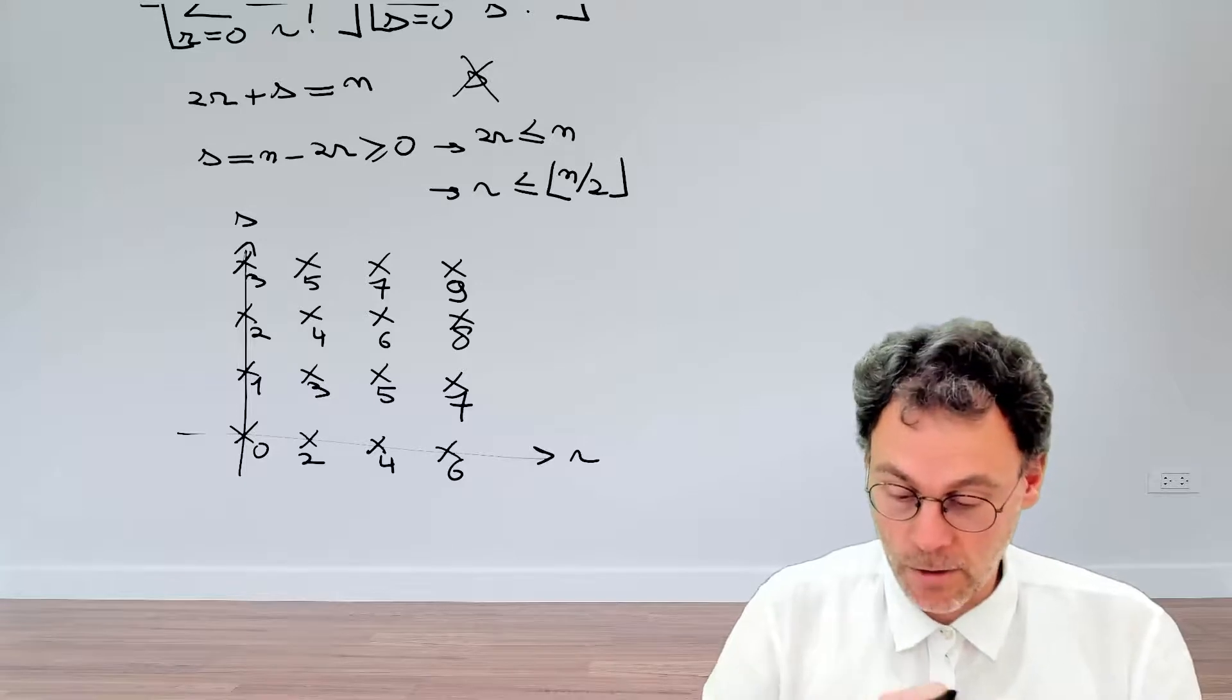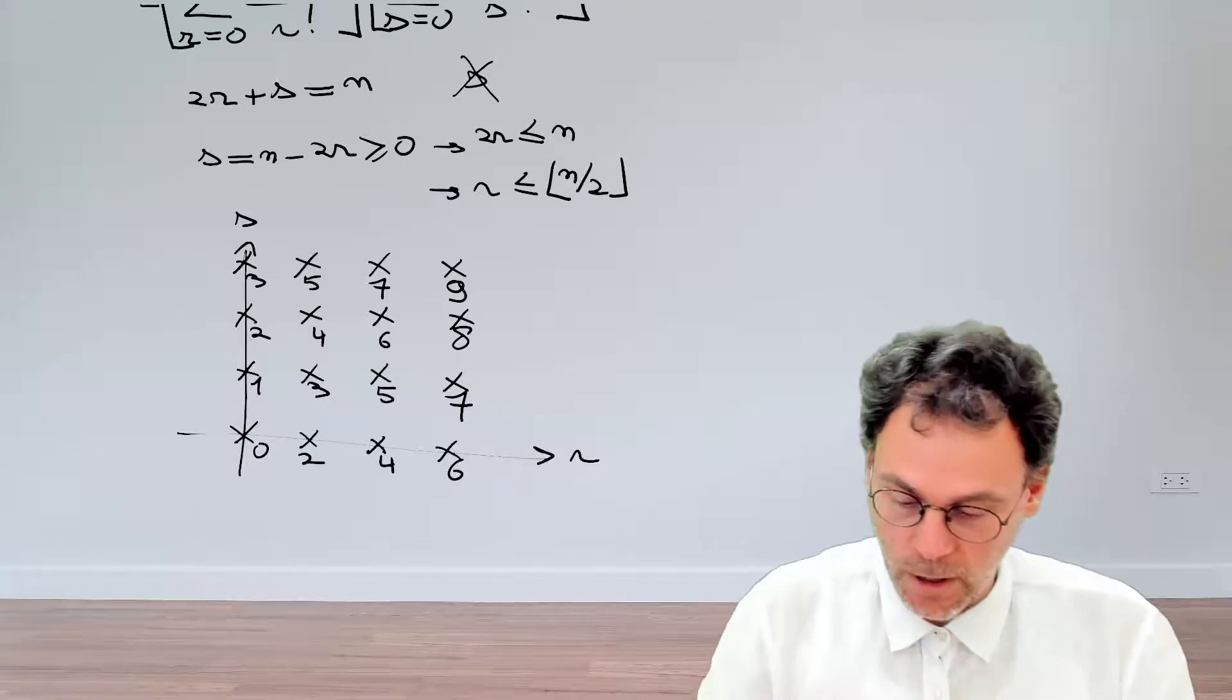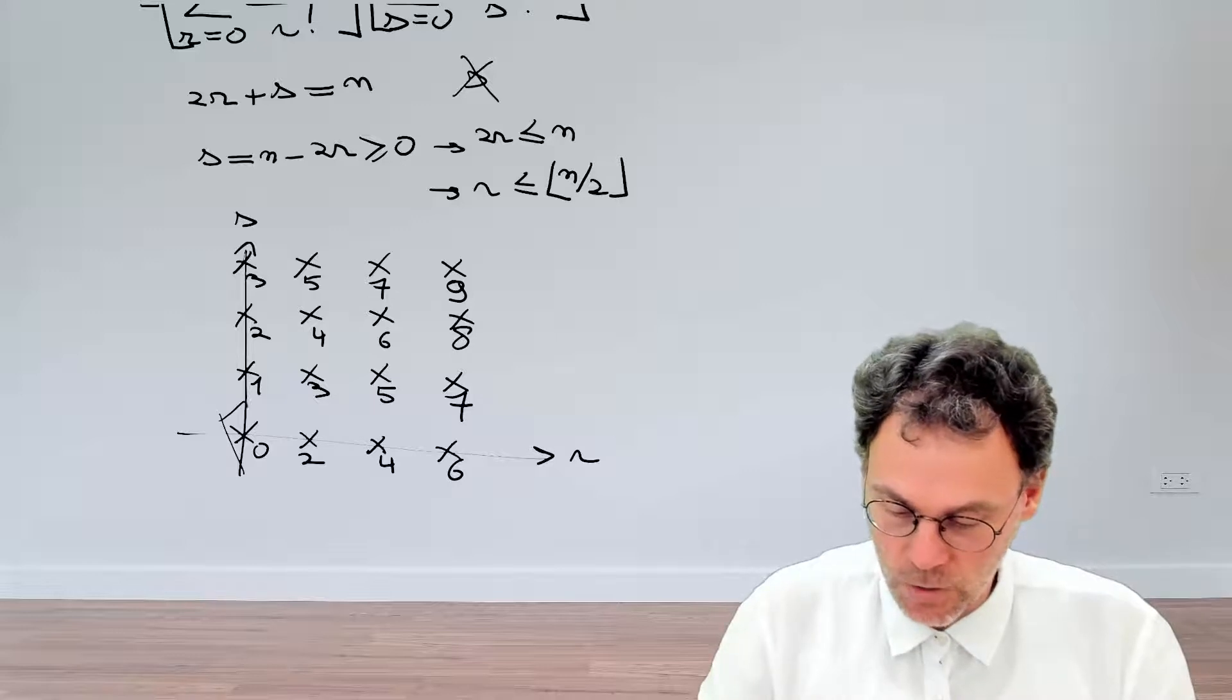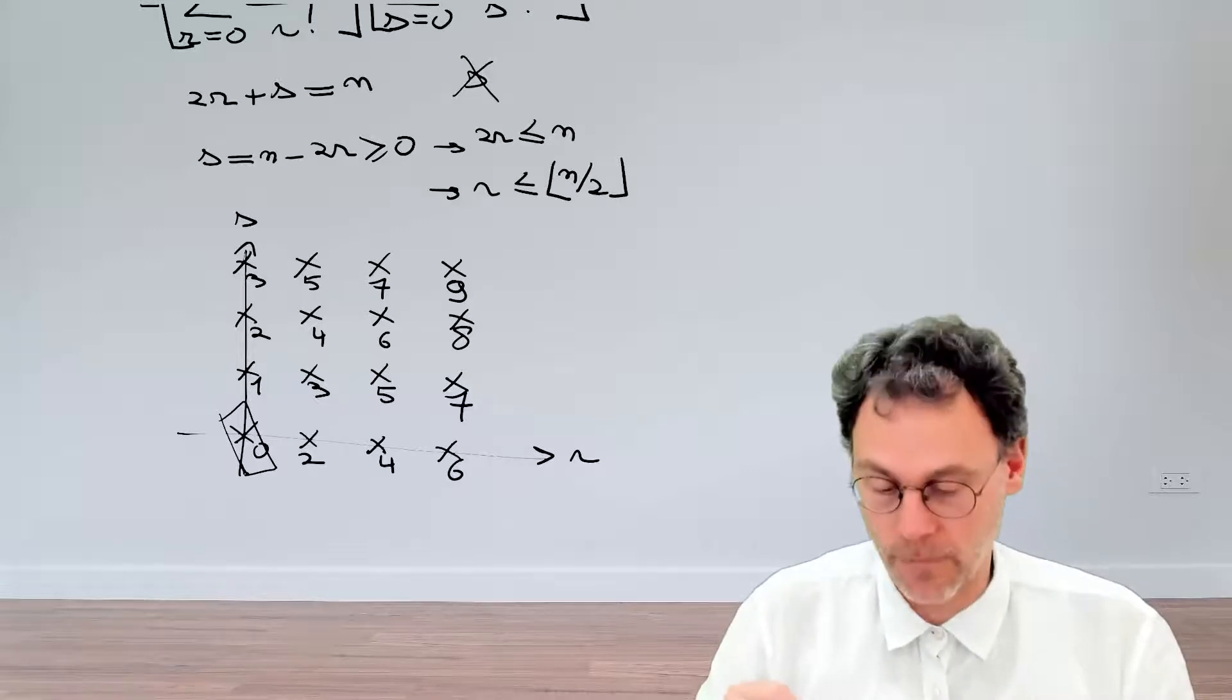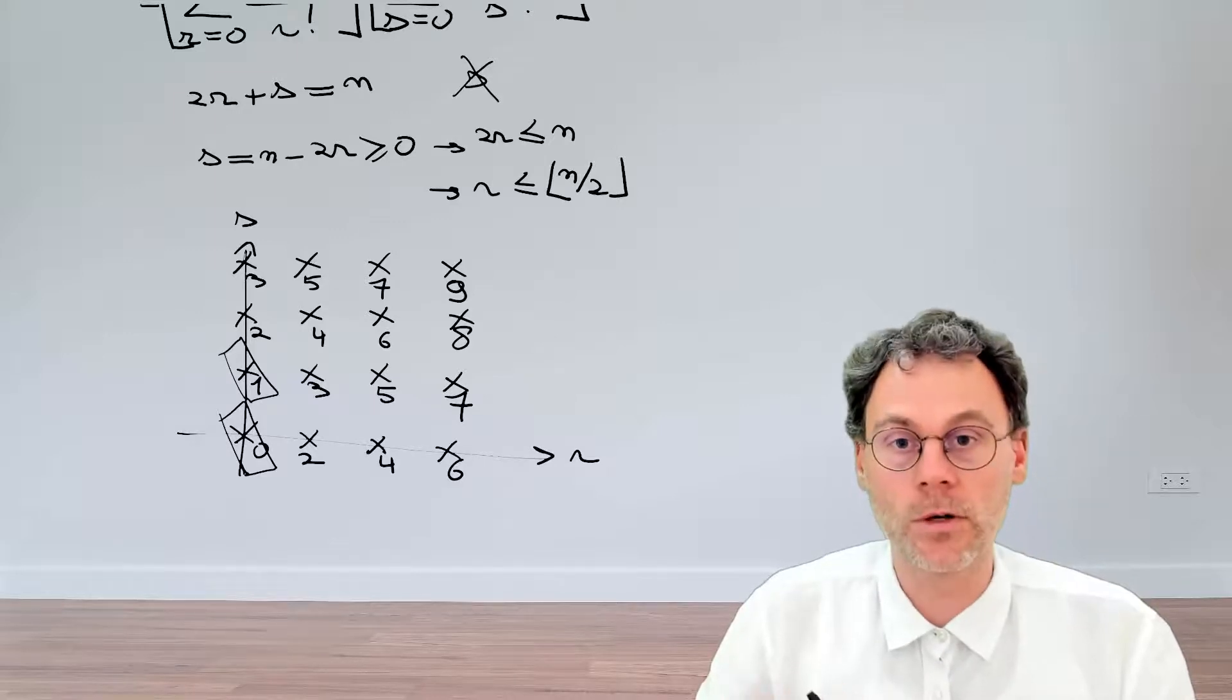Let's collect them. Let's see where we have n is equal to 0. So n is equal to 0 only appears once over here. Same thing for n equal to 1. That also only appears once there.